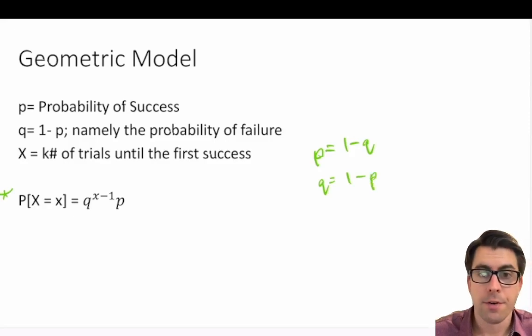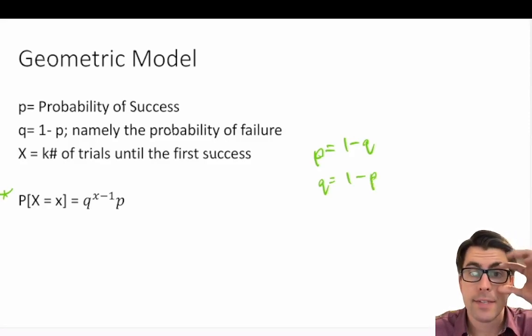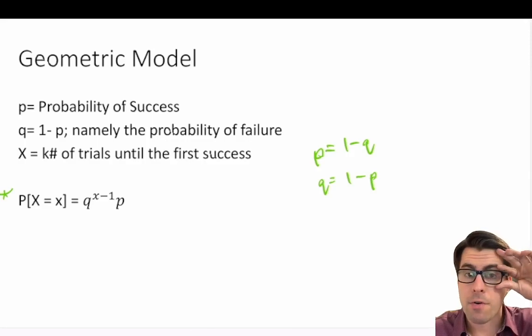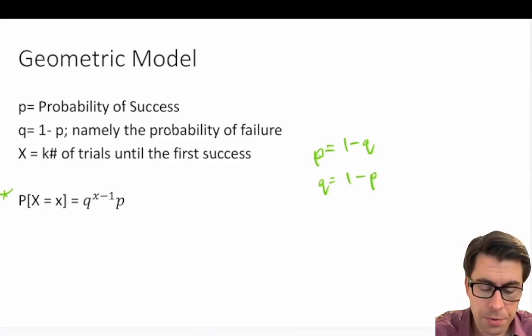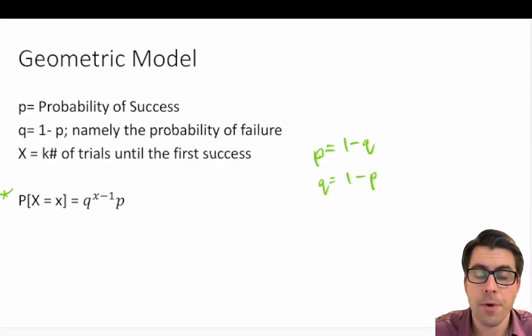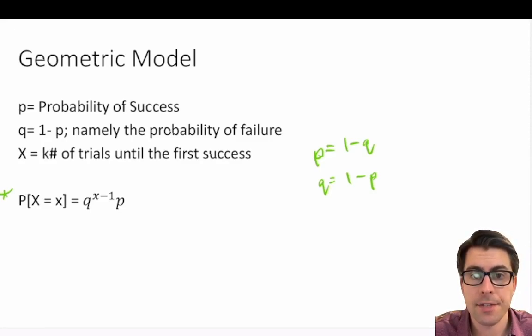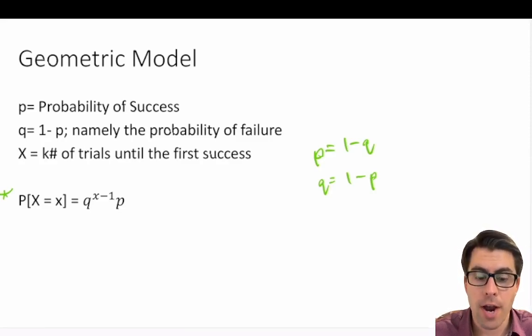So in other words, we're dealing with a binary event here — it's either a yes or a no, a win or a loss, a success or a failure. Our geometric model looks at: what is the probability that we have our first success on our nth trial?